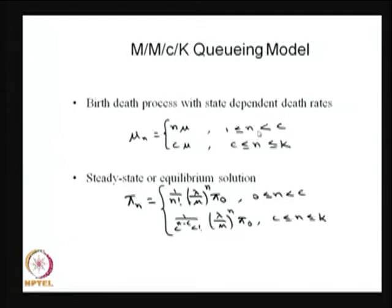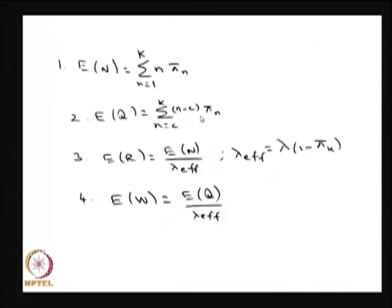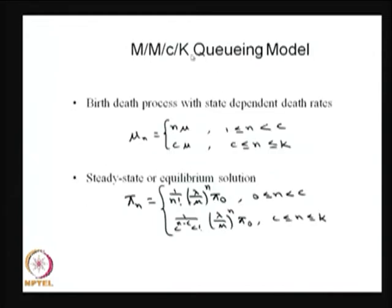The death rates are n times mu for states 1 to C, and from C to K it is C times mu. I have not drawn the state transition diagram for M/M/C/K, but you can visualize it as the combination of the M/M/1/N and M/M/C models. Since it is a finite capacity model, it is easy to obtain the steady state. First solve pi Q equals 0, writing the pi n's in terms of pi 0, then use the normalizing condition: the summation of pi n equals 1 to get pi 0.